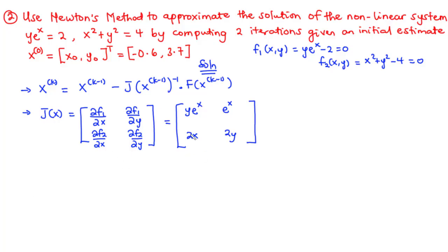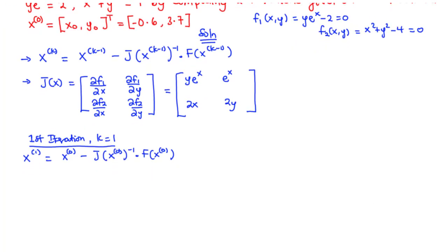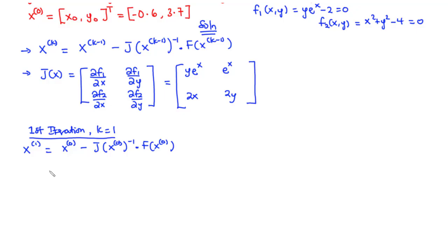After finding the Jacobian matrix, the next step is to perform the iteration steps. For the first iteration, k equals 1, so we have x of 1 equals x of 0 minus the inverse Jacobian of x of 0 times f of x of 0. Here x of 0 is x naught, y naught, which equals negative 0.6, 3.7.